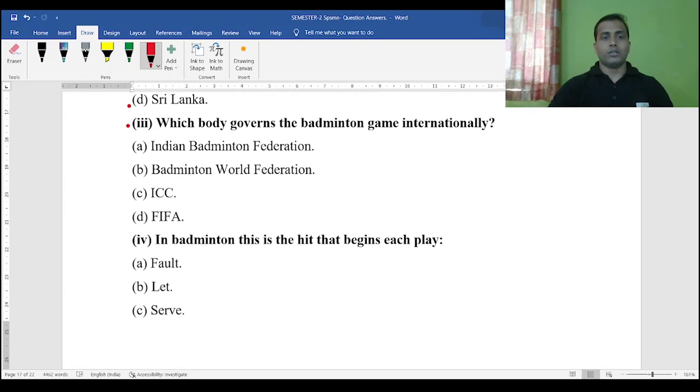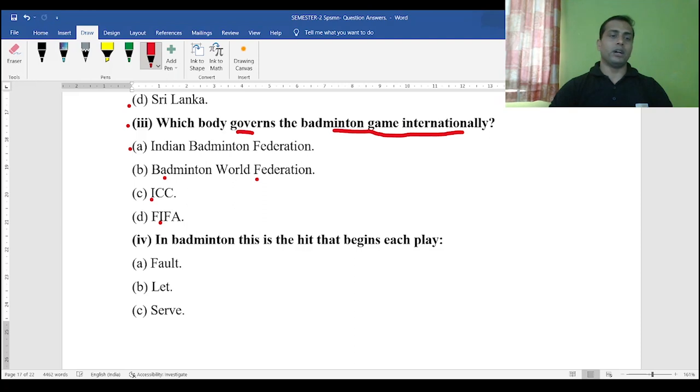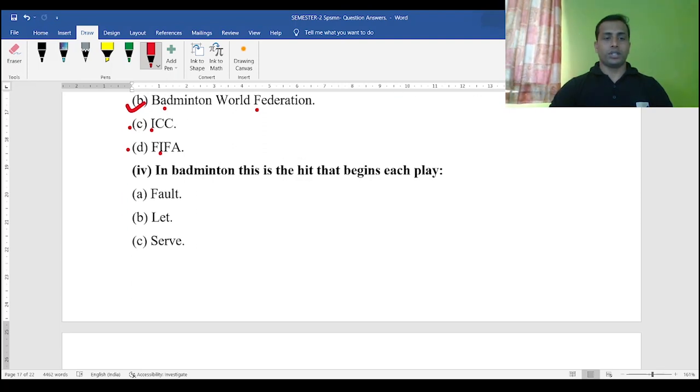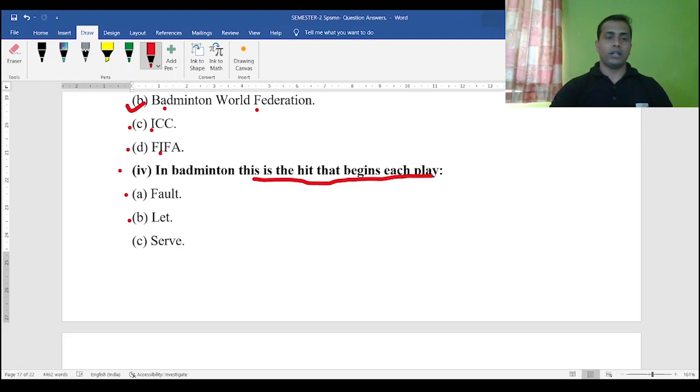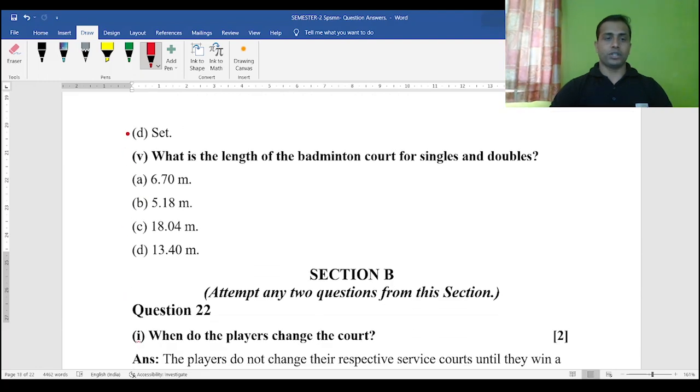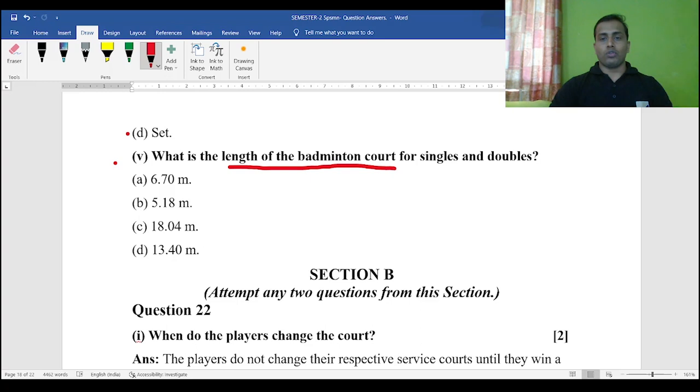Question number three: Which body governs the badminton game internationally? Indian Badminton Federation, Badminton World Federation, ICC, FIFA. The answer will be Badminton World Federation because ICC is related to cricket, FIFA is related to football, and Indian Badminton Federation is a national body for India. Next question: In badminton, this is the hit that begins each play. What is it? Fault, late, serve. Obviously the answer will be serve. What is the length of the badminton court for singles and doubles? Options are 6.70 meter, 5.18 meter, 18.04 meter, 13.40 meter. The answer will be 13.40 meter.